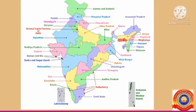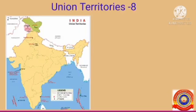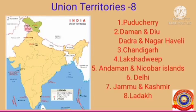Other than the states, there are 8 union territories in India. They are: Puducherry, Daman and Diu, Dadra and Nagar Haveli, Chandigarh, Lakshadweep, Andaman and Nicobar Islands, Delhi, Jammu & Kashmir, and Ladakh.